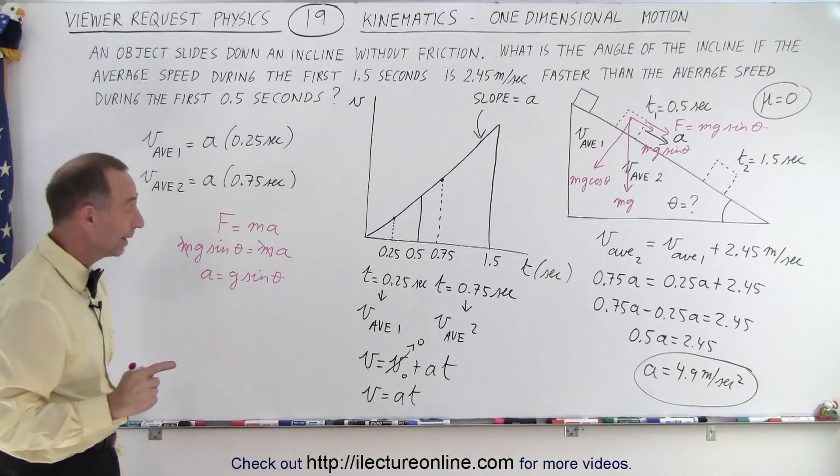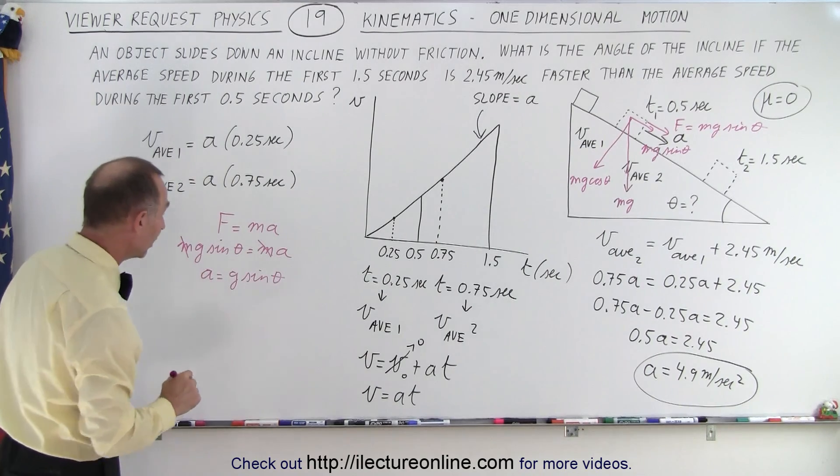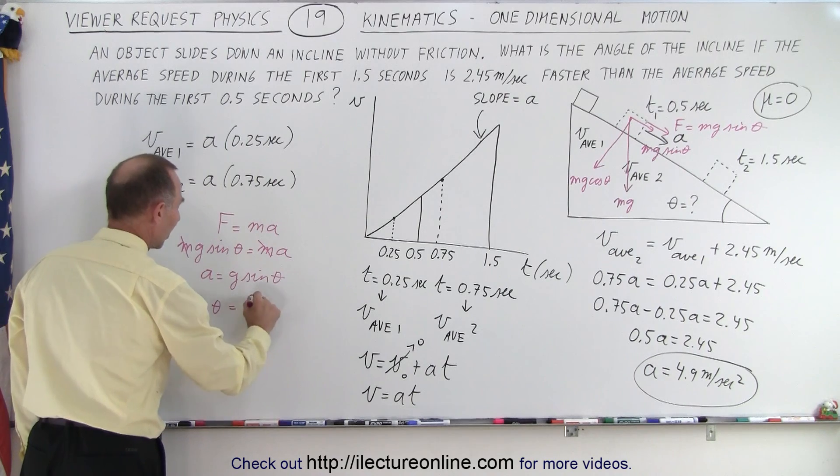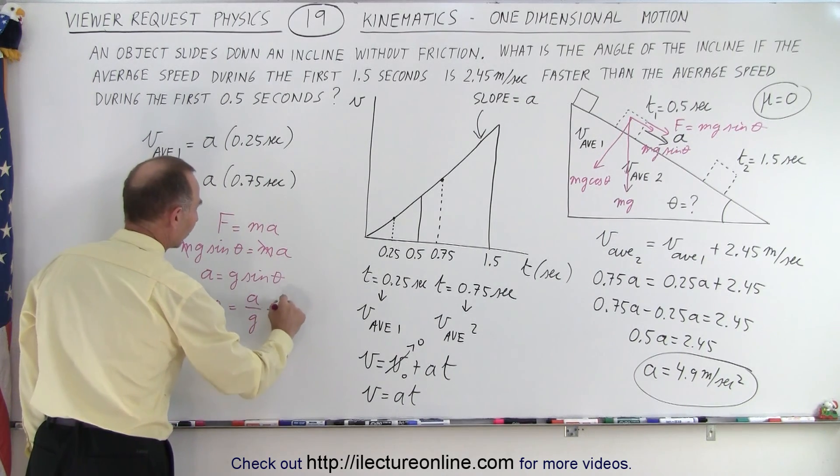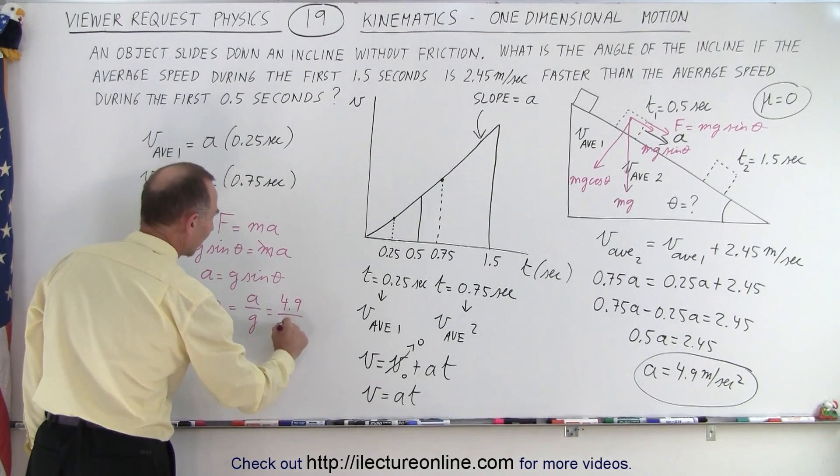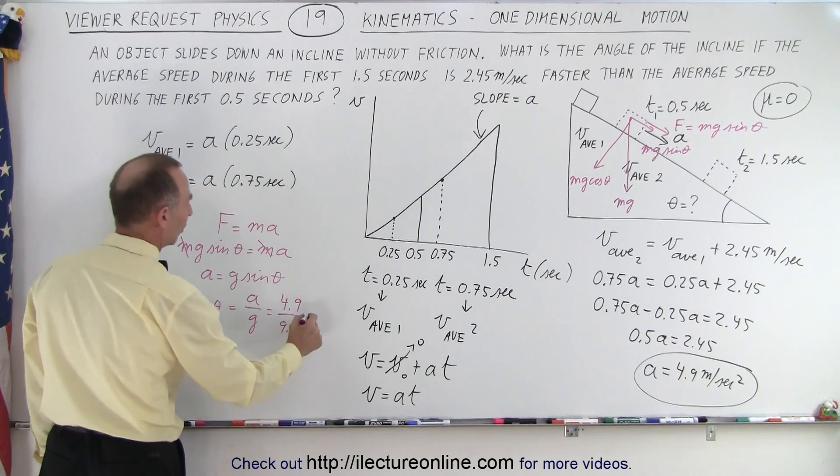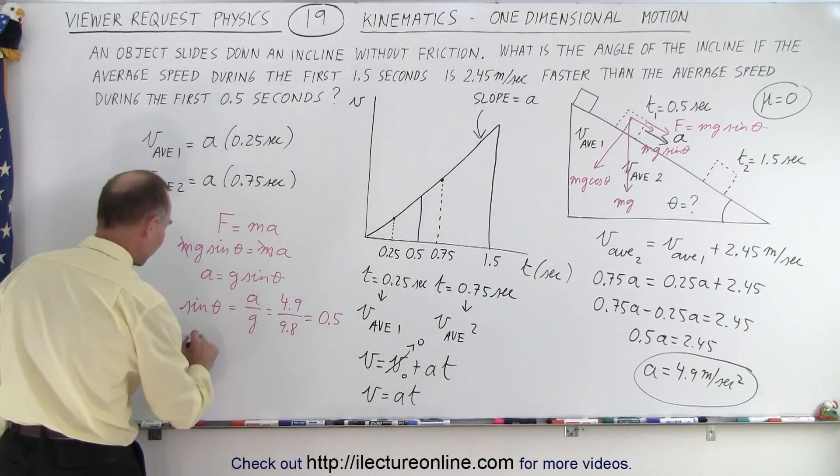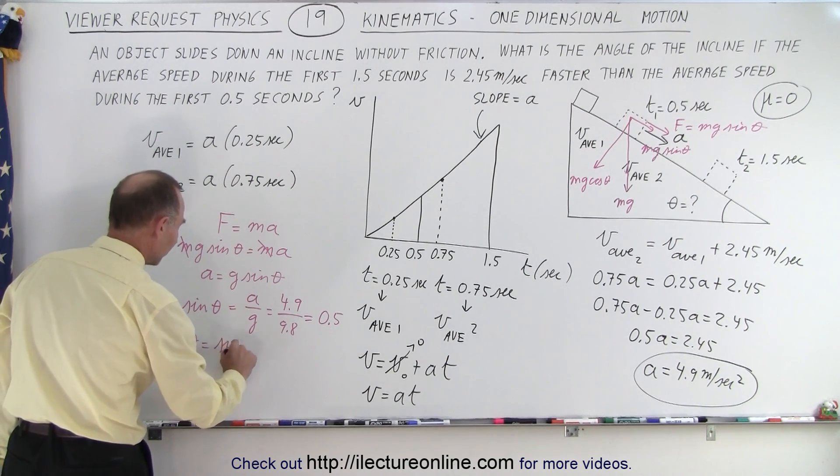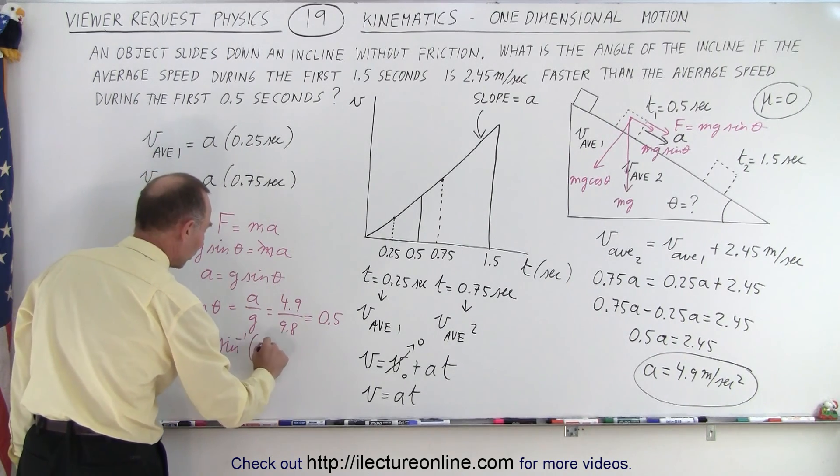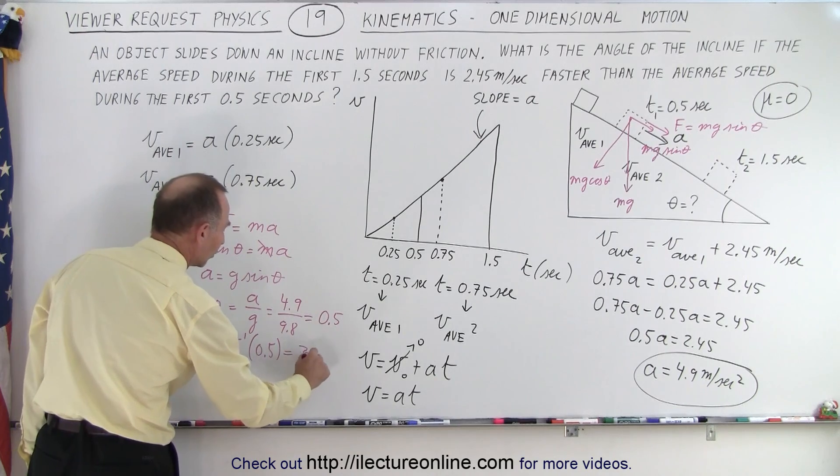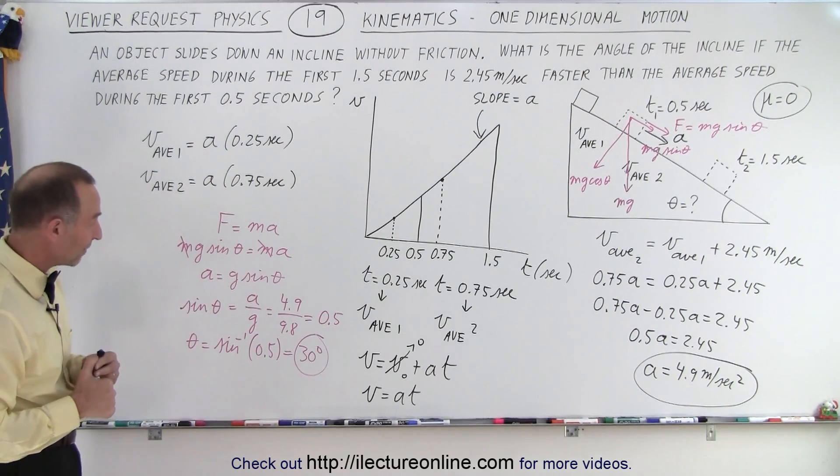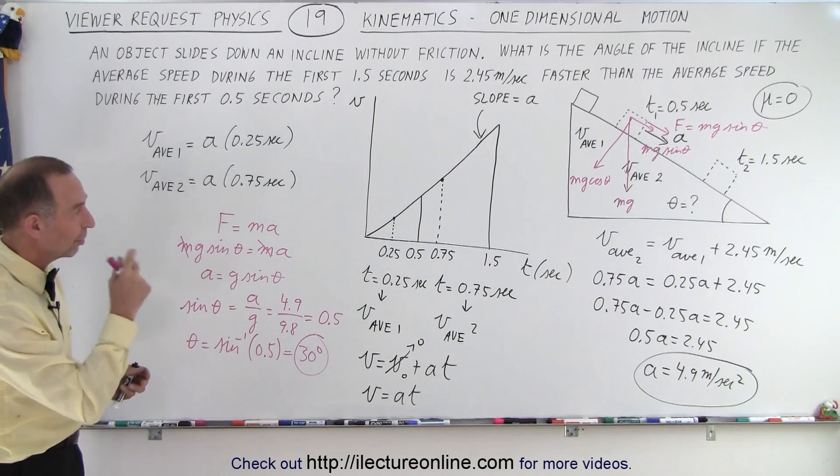But we know what a is. a is 4.9 meters per second squared. So that means that the sine of theta can be written as a over g, which is equal to 4.9 divided by 9.8 meters per second squared, which is equal to 0.5, which means that the angle theta is equal to the inverse sine of 0.5, and that would be equal to 30 degrees.